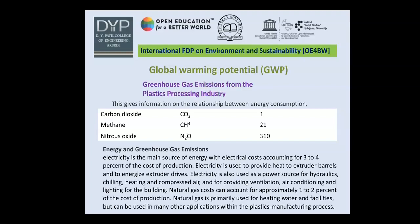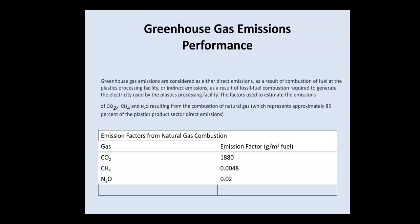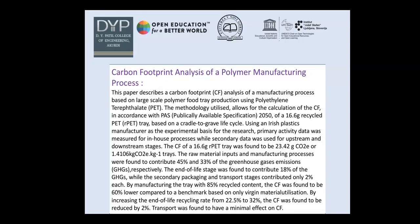Greenhouse gas emissions are considered as either direct emissions from combustion of fuel at the plastic processing facility, or indirect emissions from fossil fuel combustion used to generate electricity for the facility. Emission factors from natural gas combustion — which represents approximately 85 percent of the plastic product sector's direct emissions — are: CO2 at 1880 grams per meter cube, methane at 0.0048 grams per meter cube, and nitrous oxide at 0.02 grams per meter cube.